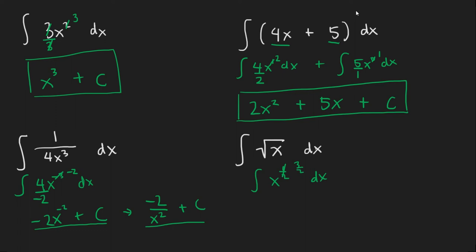This time we have to divide by 3 halves. And in other words we can just do that by multiplying by its reciprocal which is just 2 thirds. So we're left with 2 thirds x to 3 halves power plus C. And we can just leave it in that form.